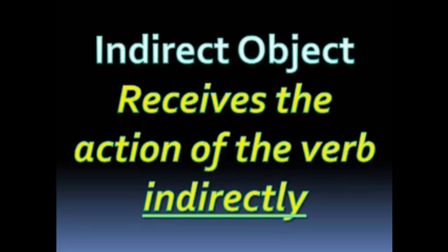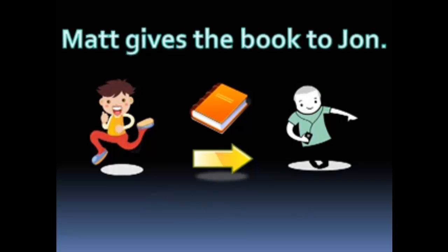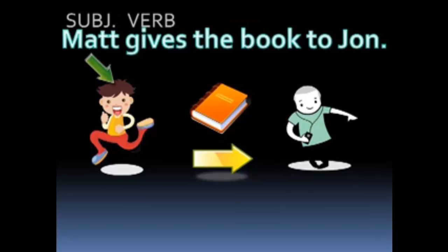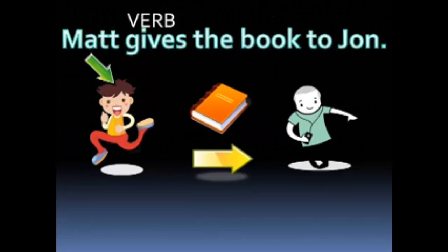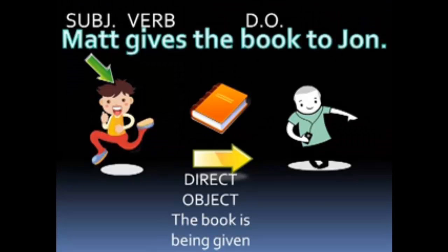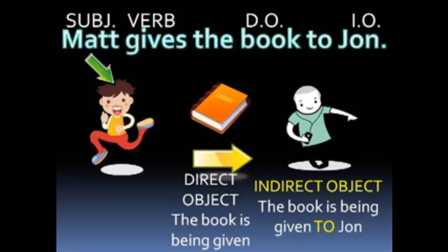As the name insinuates, an indirect object receives the action of the verb indirectly. The indirect object in the sentence indicates the "to" or "for" whom the action is completed. In the sentence, 'Matt gives the book to John' — Matt is the subject, he is the one performing the action of the verb 'to give.' The book is the direct object; it is directly receiving the action of the verb. John, though, is the indirect object because he indirectly receives the action. The book is given, but given to John.